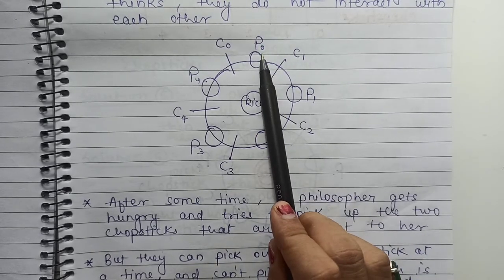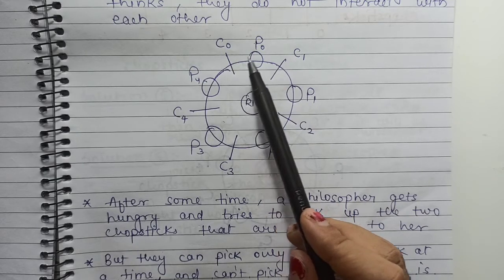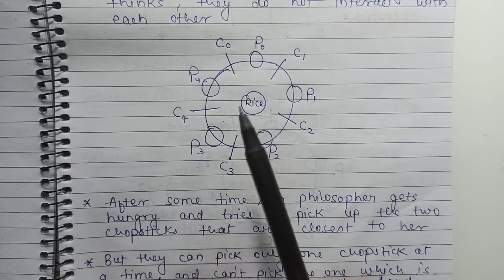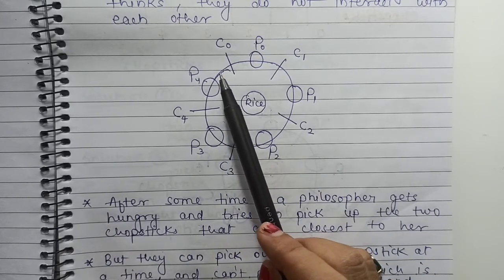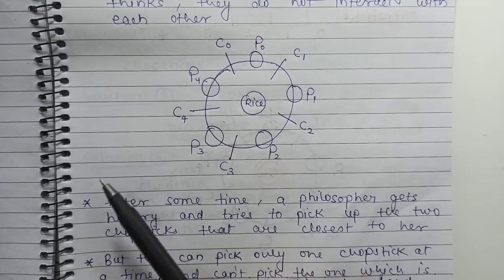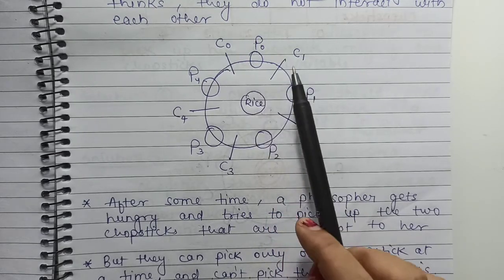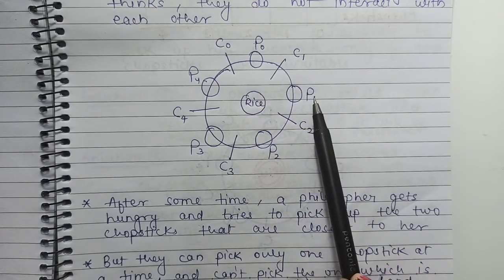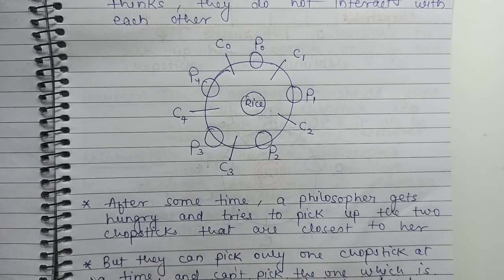So what is the problem here? We have five processes or five philosophers, and we have limited resources, that is five resources also. If each philosopher needs two chopsticks to eat the rice, what could be the solution? Here, what is the critical section? These chopsticks are the critical section. If philosopher P0 gets hungry, it will first pick either left chopstick or right chopstick, and when it goes to pick the another chopstick, it can only pick one at a time.